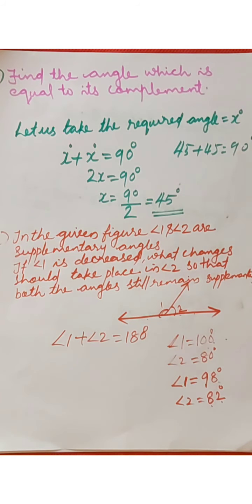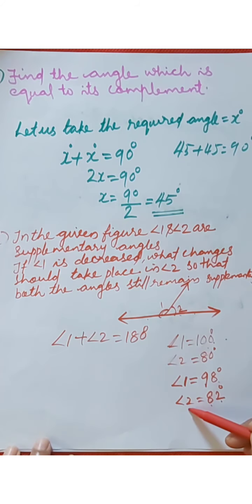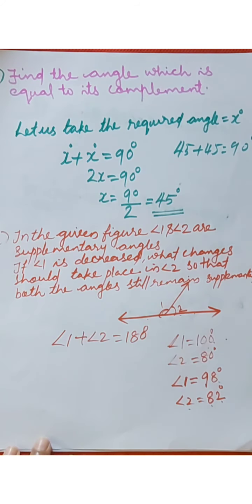Angle 2 is increased so that the two angles remain supplementary. The change must be done so that angle 1 and angle 2 are still supplementary angles.